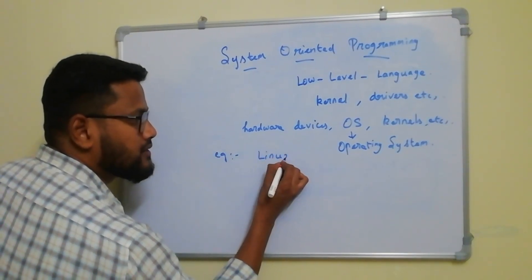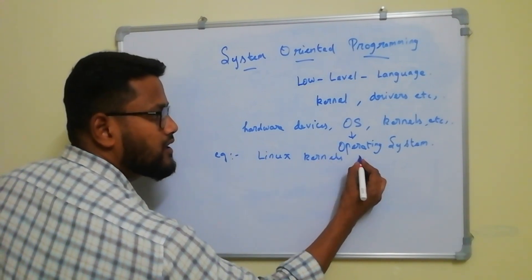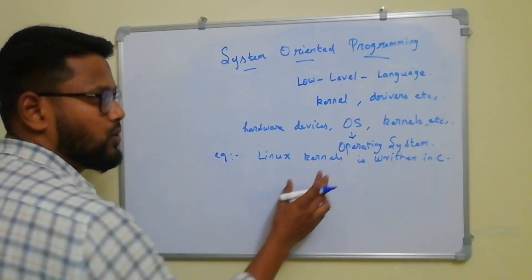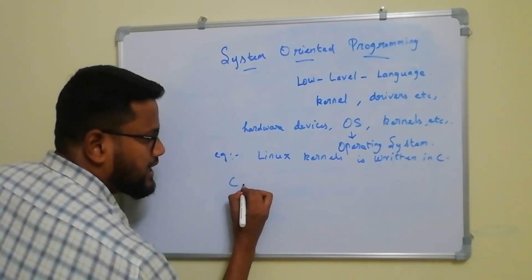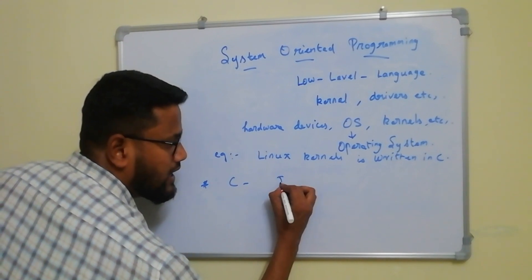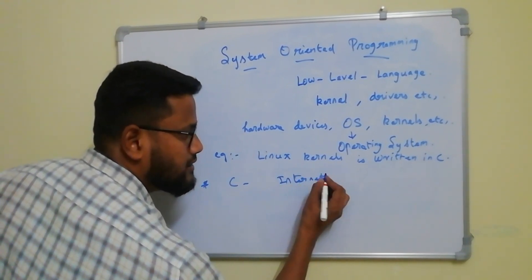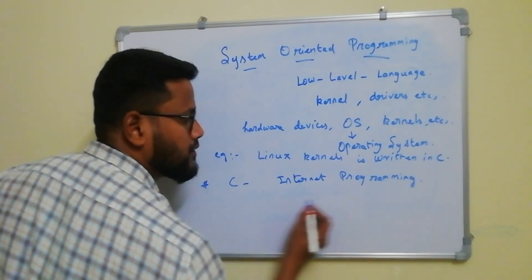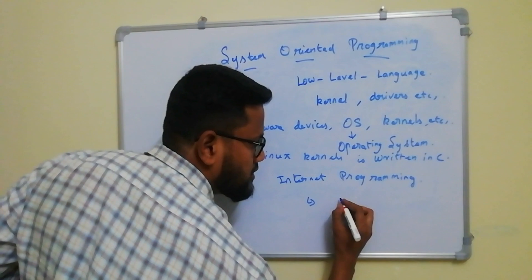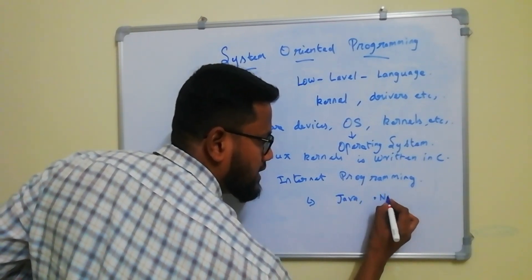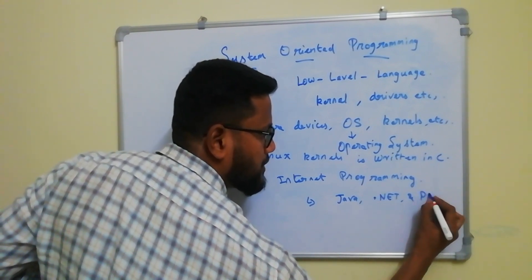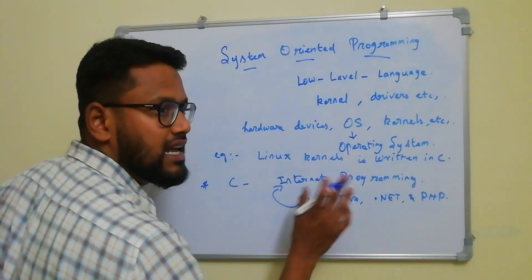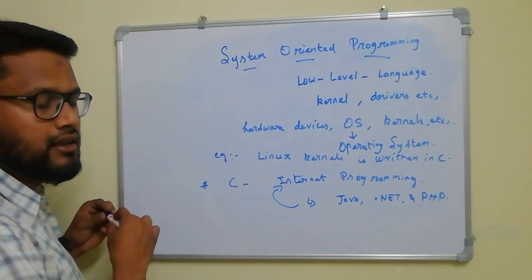Linux kernel is written in C language. C cannot be used to create internet programming. These are the system oriented programming characteristics.